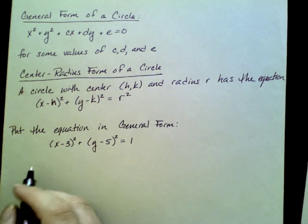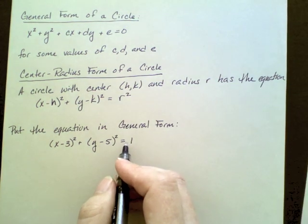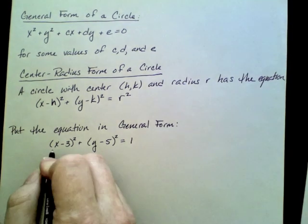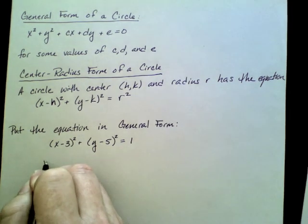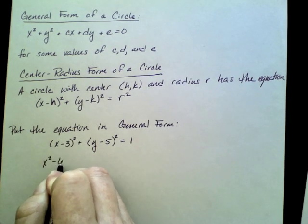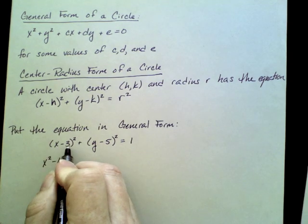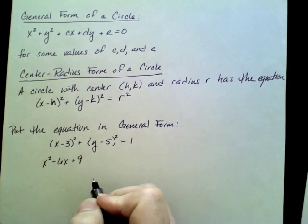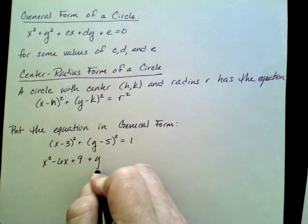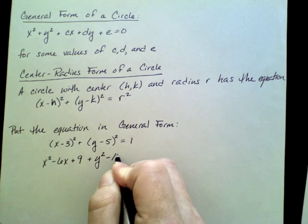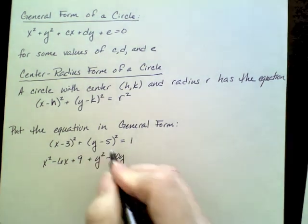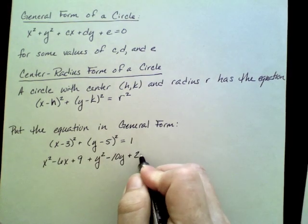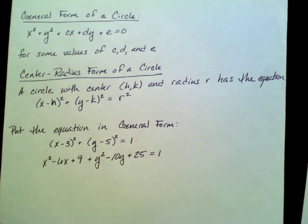Now, to put this in general form, I'm going to be using that useful fact I reminded you of at the beginning. Expanding this will give me x squared minus 6x (that's 2 times x times negative 3) plus 9 (because that's negative 3 squared), plus y squared minus 10y (that is 2 times y times negative 5), plus 25 (negative 5 squared), and that equals 1.